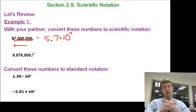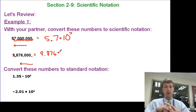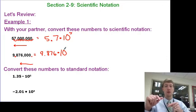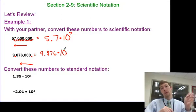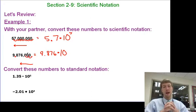Looking at the next problem: 9,876,000. I want to move the decimal so it's between 1 and 10 — that's going to be 9.876. Be careful that you're not just getting rid of the zeros; you want to move the decimal all the way so your leading number is between 1 and 10. We move it six times, so it's 9.876 times 10 to the sixth.